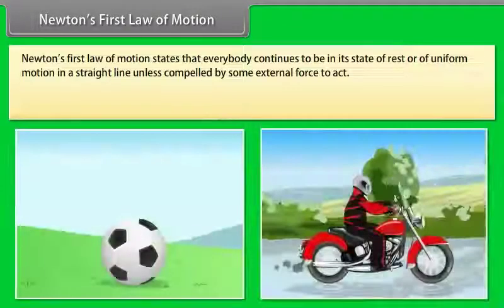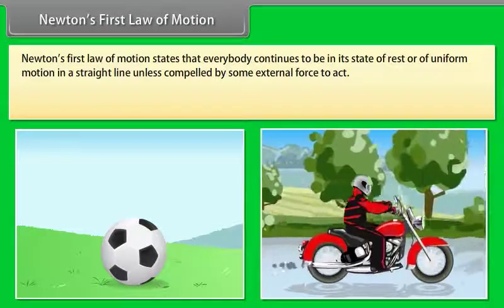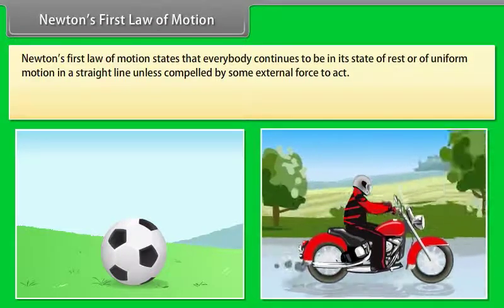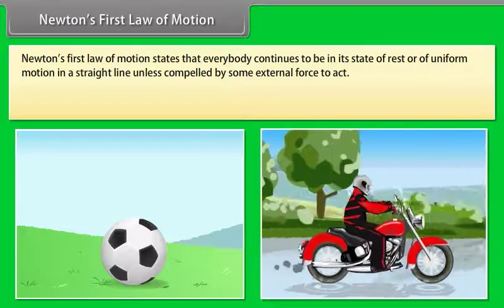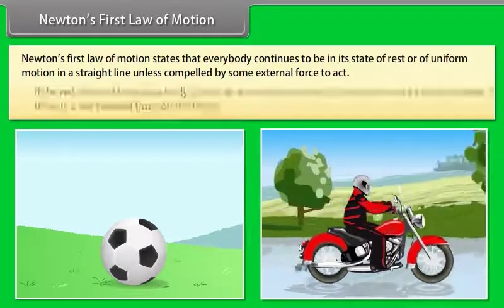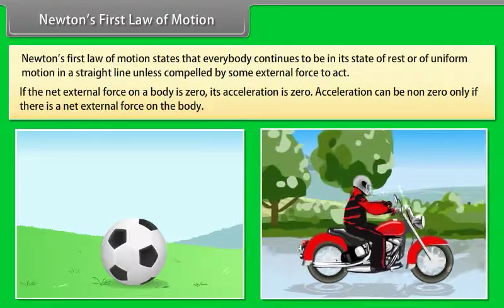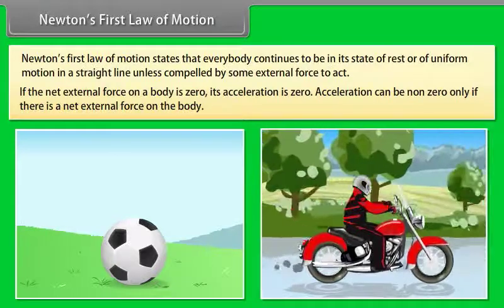Newton's first law of motion states that every body continues to be in its state of rest or of uniform motion in a straight line unless compelled by some external force to act. If the net external force on a body is zero, its acceleration is zero. Acceleration can be non-zero only if there is a net external force on the body.